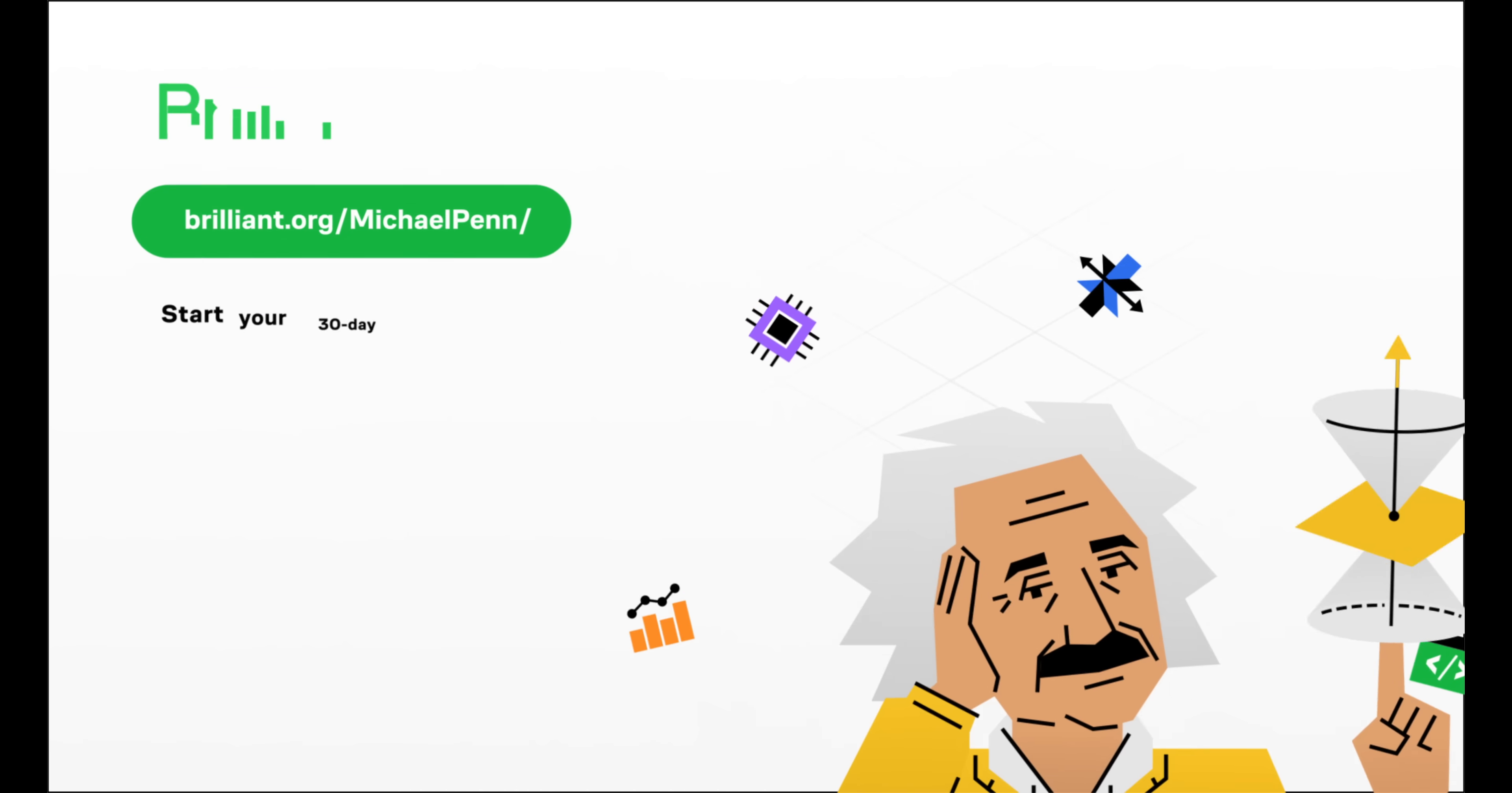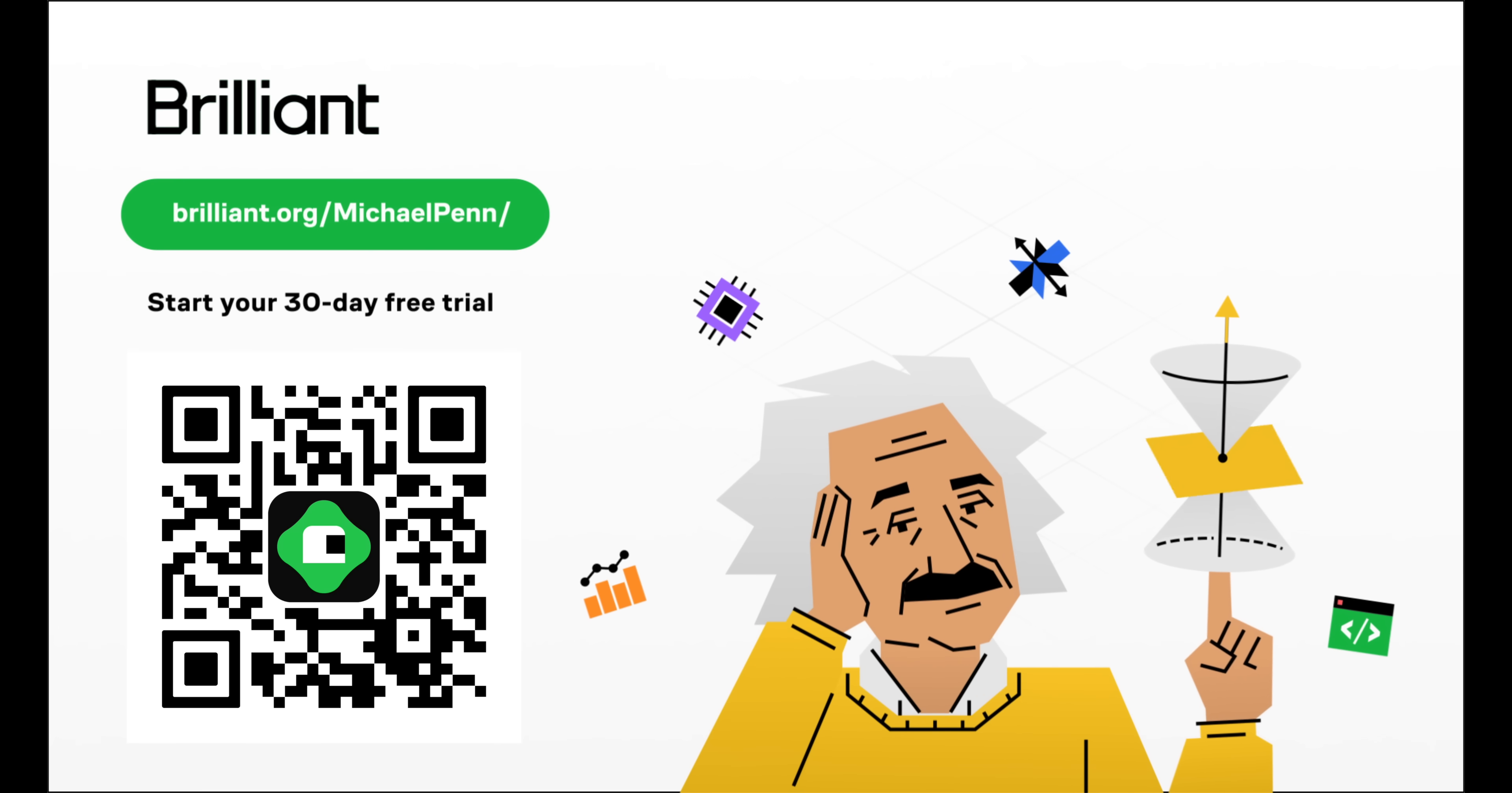But we're scientists here, so don't take my word for it. You should test it for yourself. Treat yourself to a unique hands-on experience by going to brilliant.org slash Michael Penn for a 30-day free trial and 20% off your annual subscription. Thanks once again to Brilliant for sponsoring today's video.